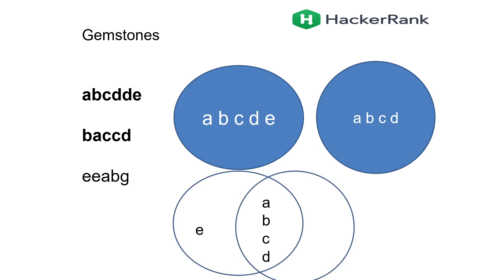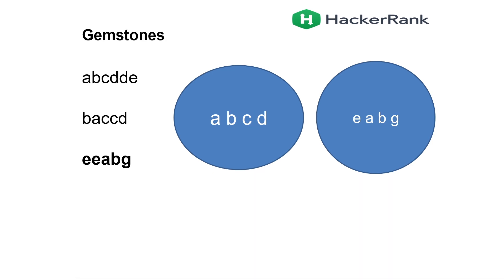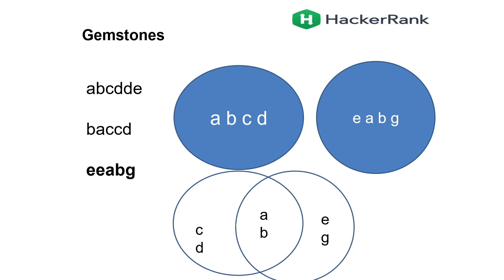Between the first and second rock I found A, B, C, D is common. E was only present in the first rock, not present in the second. I will take those common things — the intersection of the first and second set — and then perform an intersection with the third rock. On doing this, only A and B is common. C and D were only common for the first two, not present in the third. E and G are only present in the third. So the final set gives A and B, and the length of that set is the answer.